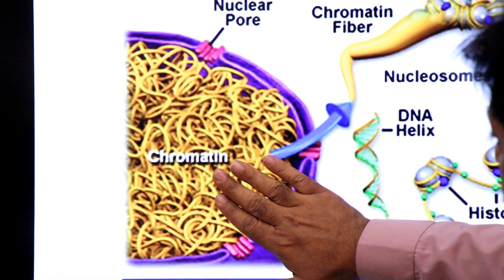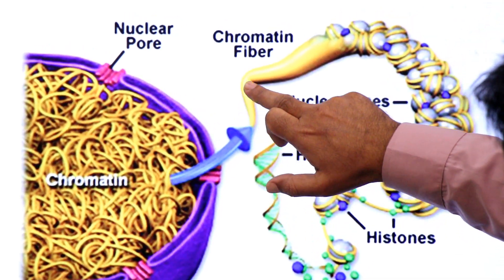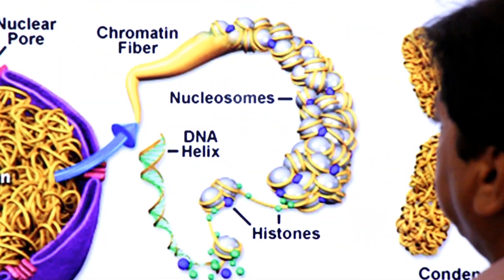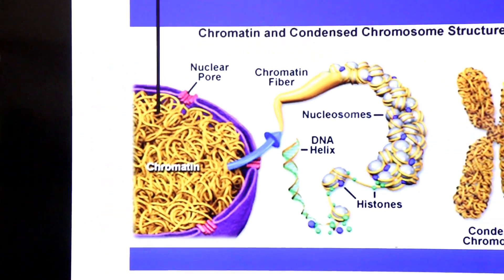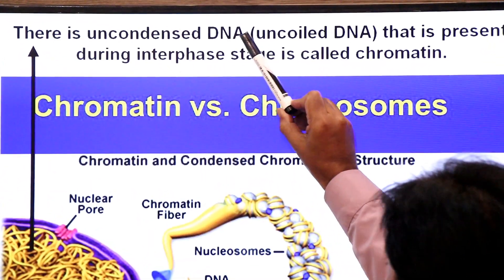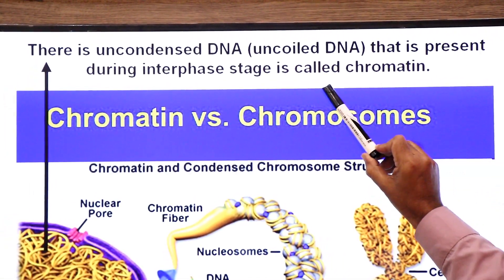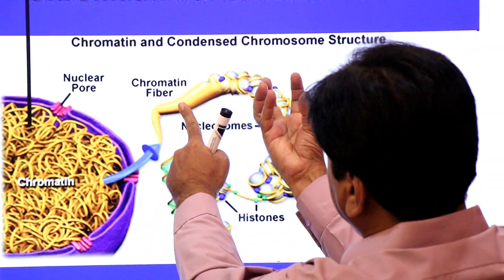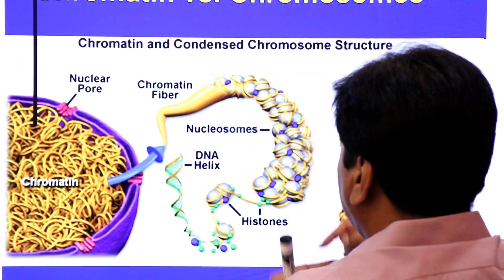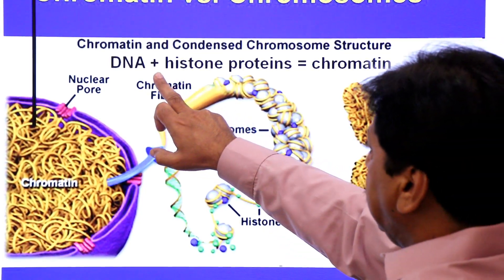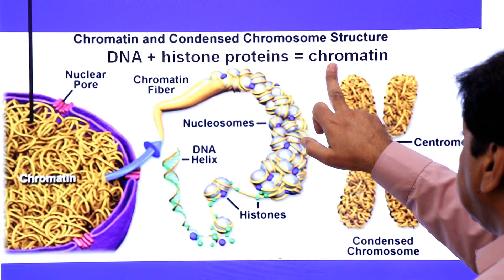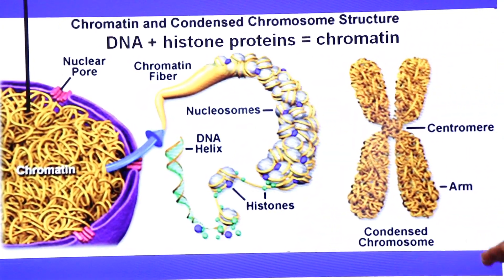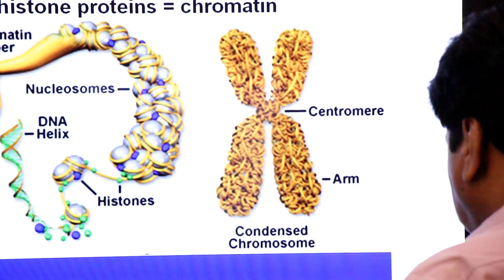The chromatin is uncoiled DNA. It consists of DNA plus histone proteins — the DNA is coiled around histone proteins to form a bead-like structure. This complex of DNA plus histone protein is called chromatin. When it is further folded into a highly organized or super-coiled form, it is called chromosomes.